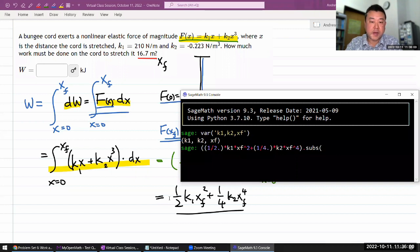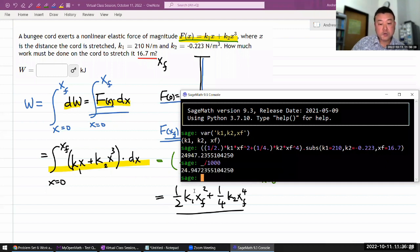And I can substitute in the values I have. K1, I'm given that as 210 in basic SI units. K2, I'm given that as minus 0.223 in basic SI units. And X final, I'm given that as 16.7 in basic SI units. So when I do that, I get that answer. Now that's in joules, basic SI units. So I have to take that and divide by a thousand to get actually what they're asking for. 24.9 kilojoules.